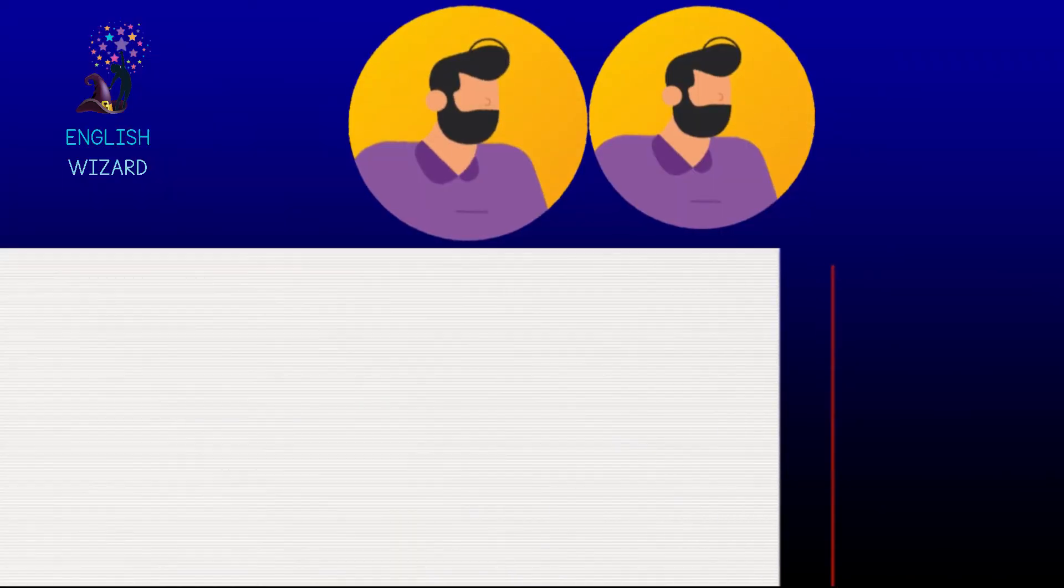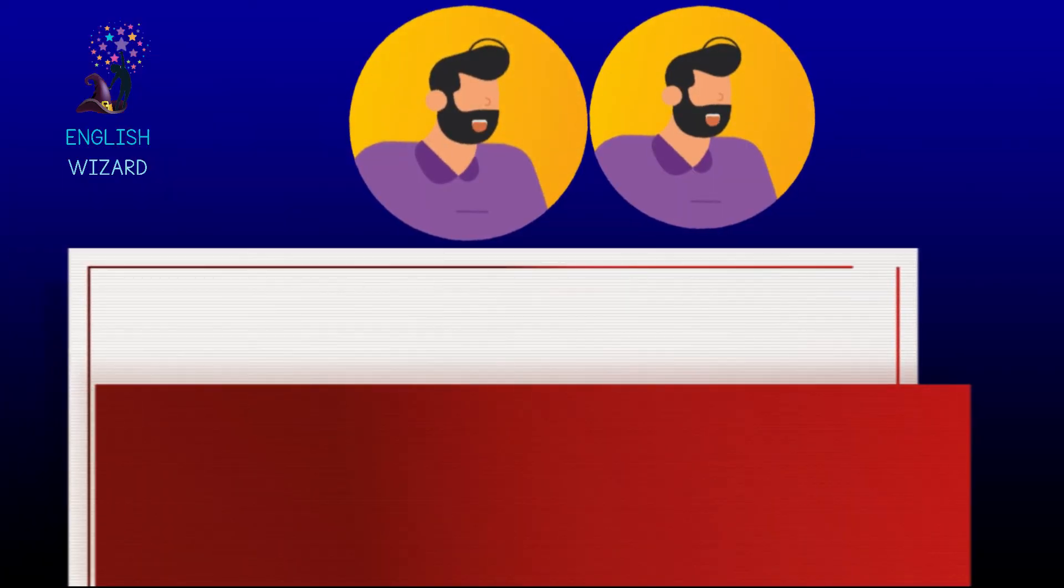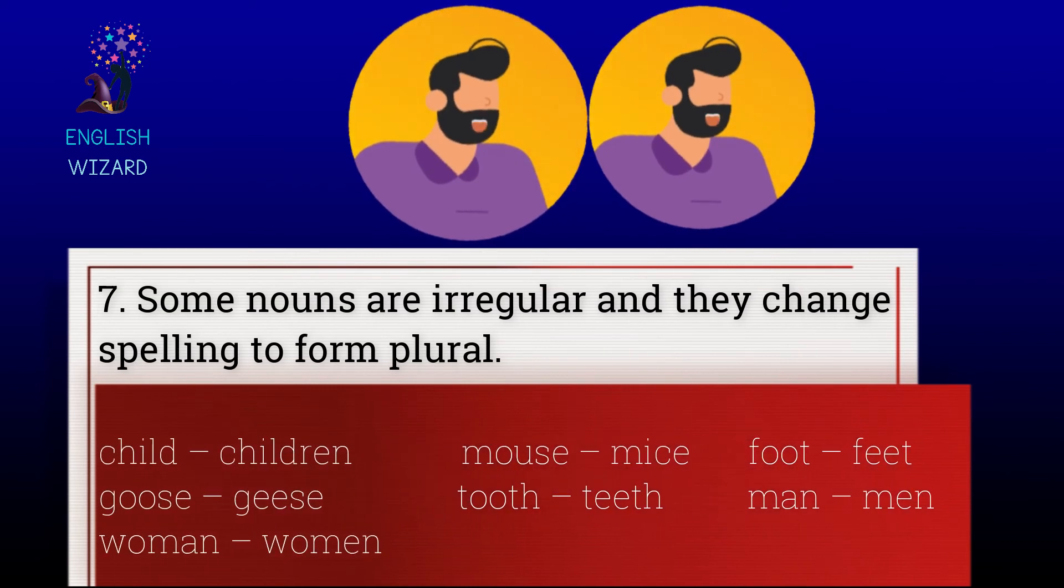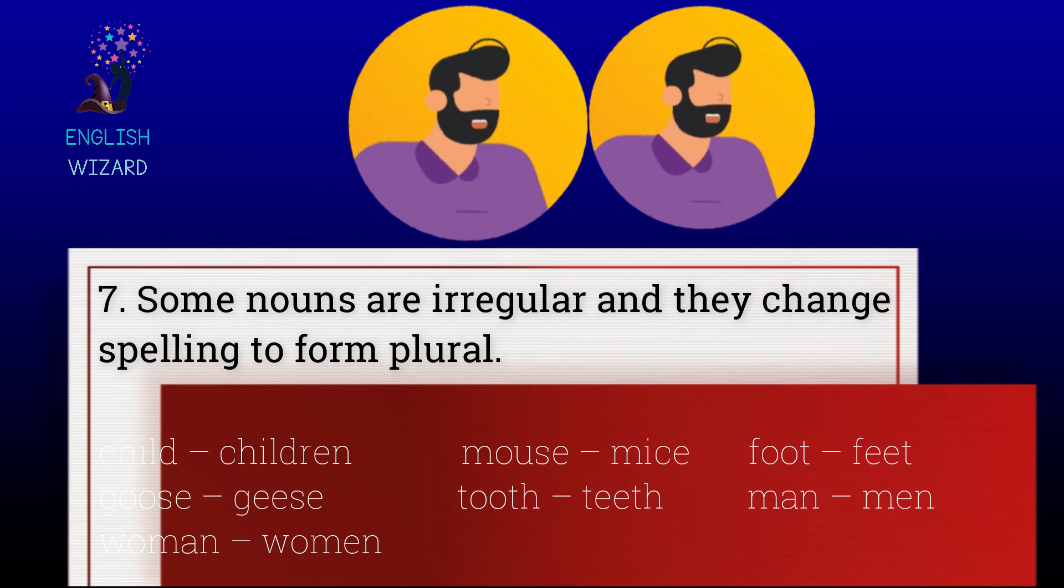Some nouns are irregular and they change spelling to form plural. Examples: Child, children. Mouse, mice. Foot, feet. Tooth, teeth. Man, men. Woman, women.